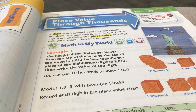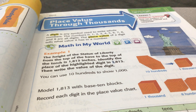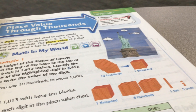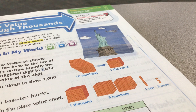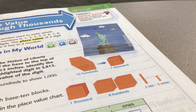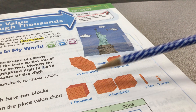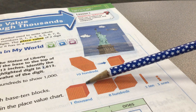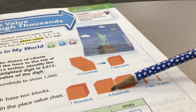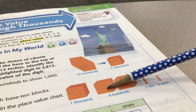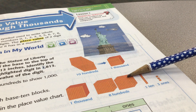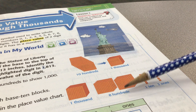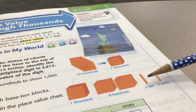1,813 with base-10 blocks would look like this. 1,000 — remember that big square is 1,000. Then 800: 1, 2, 3, 4, 5, 6, 7, 8 hundreds.